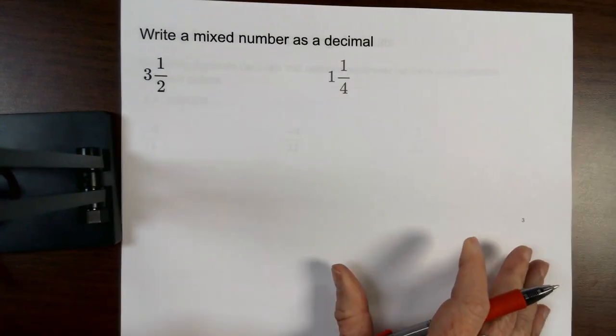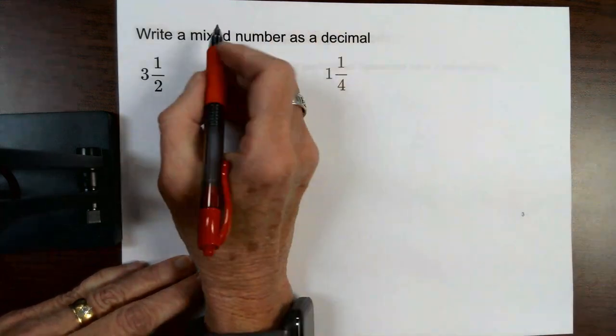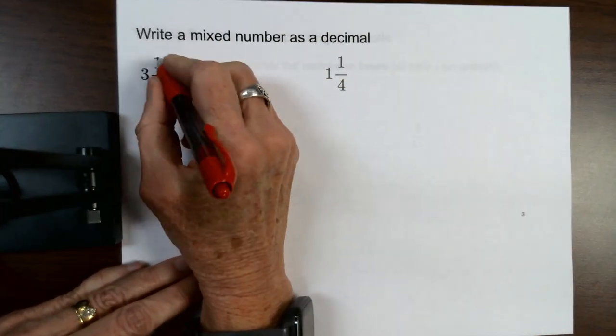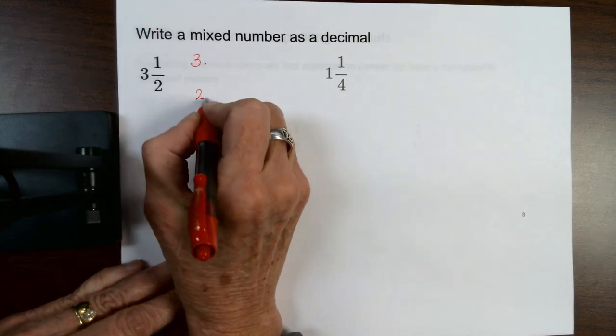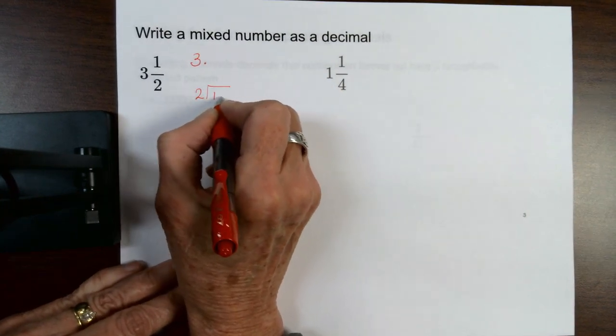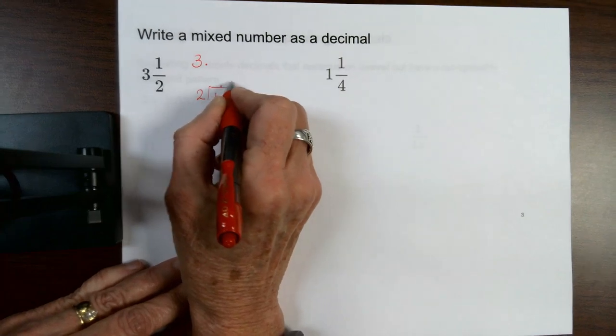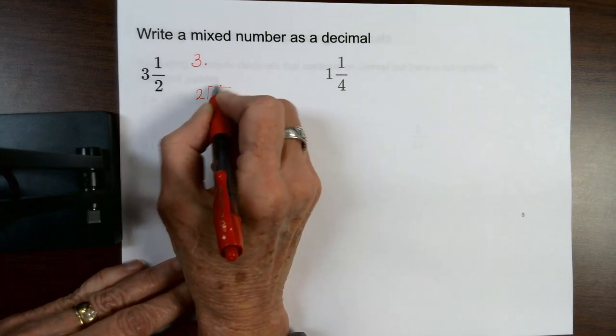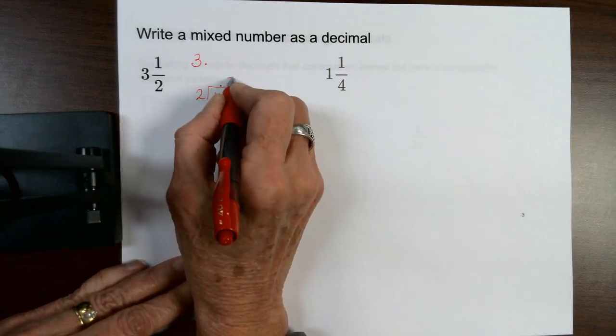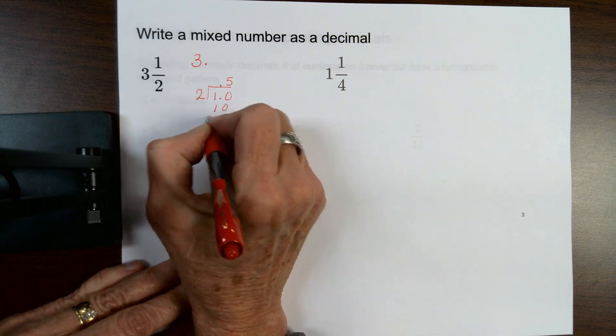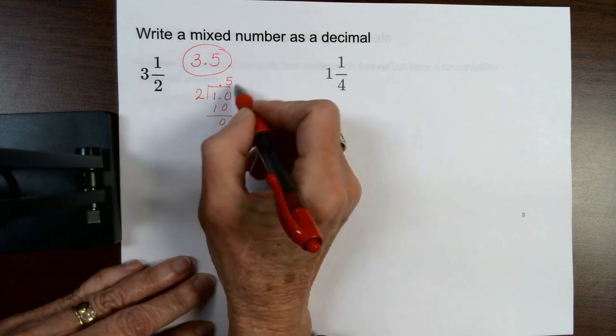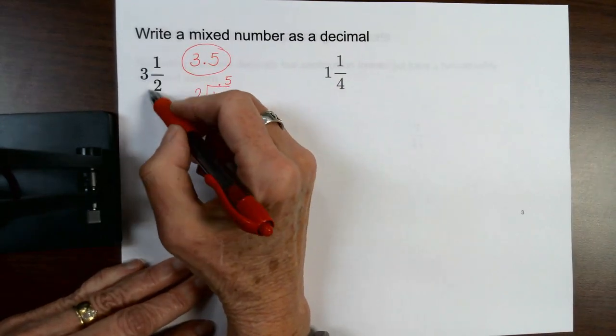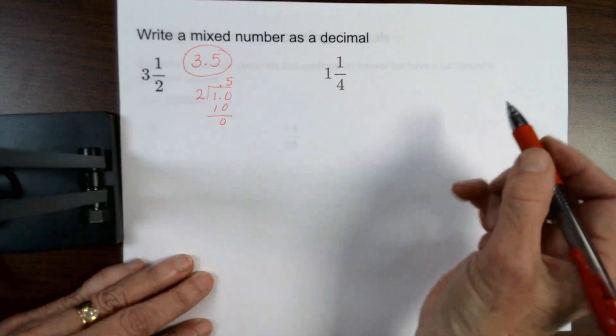I can write a mixed numeral as a decimal. I'm going to take the fraction part. So I've got a 3 point something. The something I'm going to get by dividing the 2 into the 1. Add the decimal, bring it up. 2 goes into 10, 5 times. And I'm going to get 3.5. So this is the decimal value of 1 half.